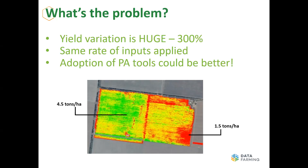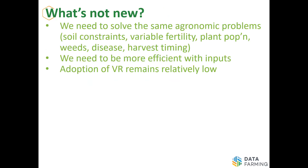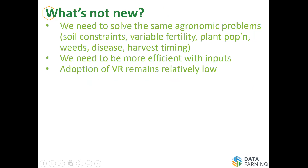Adoption of precision ag tools has been pretty slow, and that's not the fault of the growers' willingness — it largely comes down to the technology not being simple enough to implement with a clear value proposition. We're at the point now where we're getting there. We're still trying to solve the same economic problems: soil constraints, variable fertility in soils, plant populations changing due to soil and planting conditions, weeds, pests and diseases, and harvest timing. We need to be more efficient with inputs — we're over-fertilising areas that aren't producing and under-fertilising areas that are, creating a constraint on productivity and efficiency.